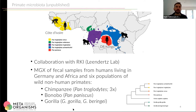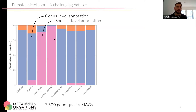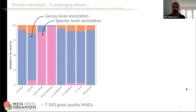Looking at this data, it's a challenging dataset to work with. Looking at humans, you find in the middle the large pink cluster — large parts of the community are well-described and known species defined on genome similarity. But looking at all the other hosts, we find they are mostly only defined at genus level, so there is a lot of diversity that is simply not known yet in this context.